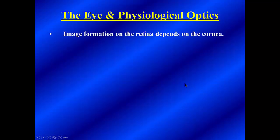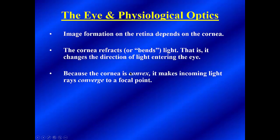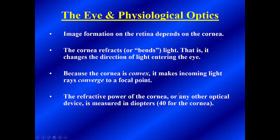If we zoom in, we can learn about image formation on the retina. Specifically, image formation on the retina depends on two components. First, the cornea. The cornea refracts or bends light — it changes the direction of light entering the eye. We'll be talking about the refractive power of the cornea and also of the lens. The refractive power is really the bending power. Because the cornea is convex, it makes incoming light rays converge to a focal point. The refractive power of the cornea, or any other optical device, is measured in a unit called the diopter. We happen to have about 40 diopters of refractive or bending strength in the cornea.